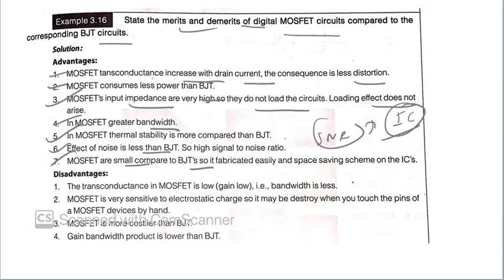What are the disadvantages? The transconductance in MOSFET is low. That is, bandwidth is less. Second, MOSFET is very sensitive to electrostatic charge. So, it may destroy when you touch the pins of a MOSFET devices by hand. Why? If we touch anything by our hand, there is something called temporary charge which is generated towards the pins at the MOSFET. Therefore, it can destroy the MOSFET. Third one is, MOSFET is very costly than BJT. And second, gain-bandwidth product is lower than BJT.